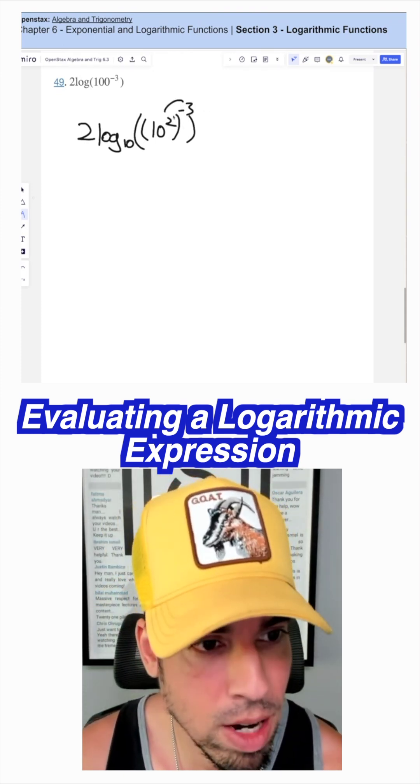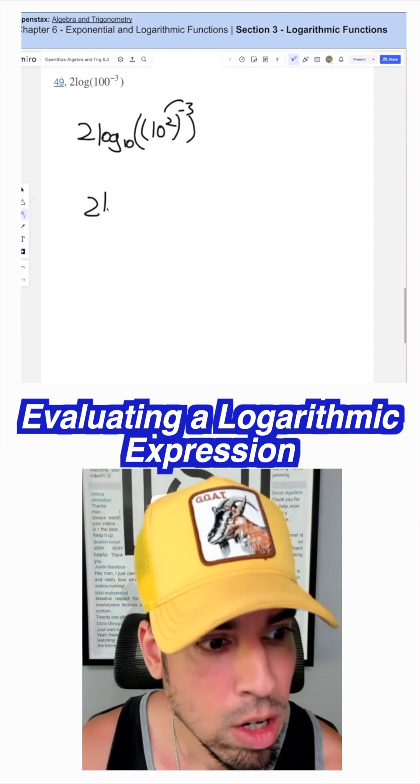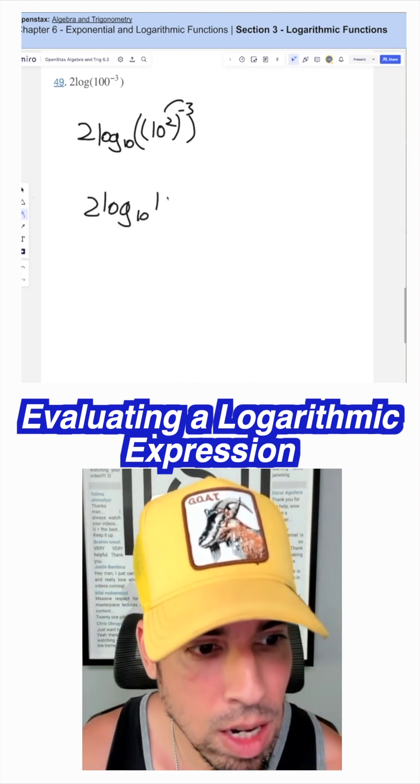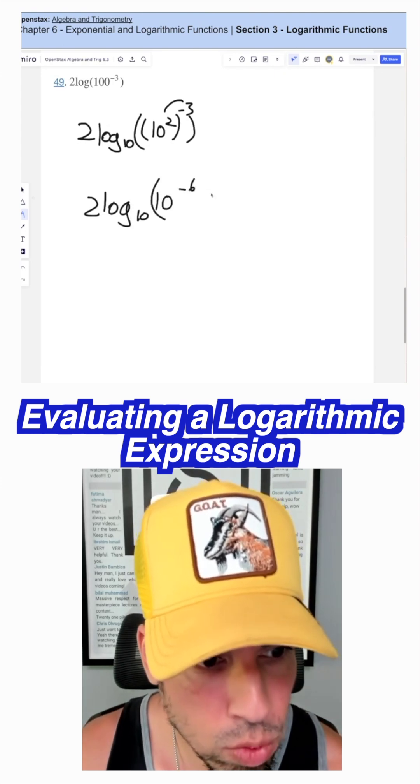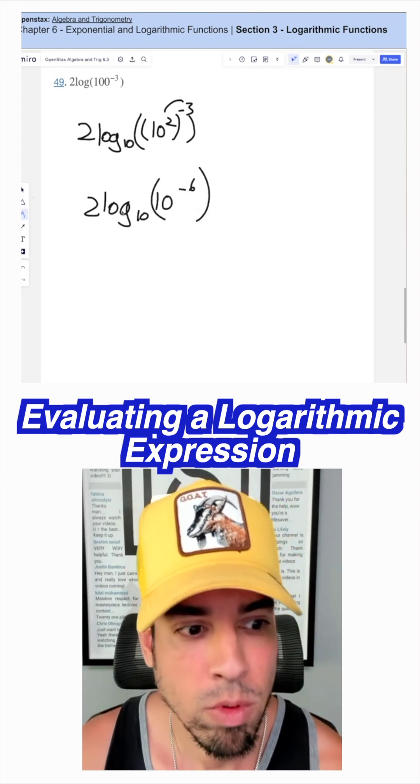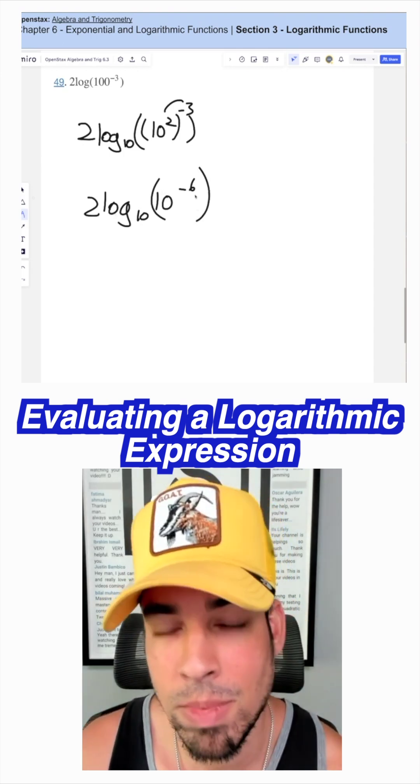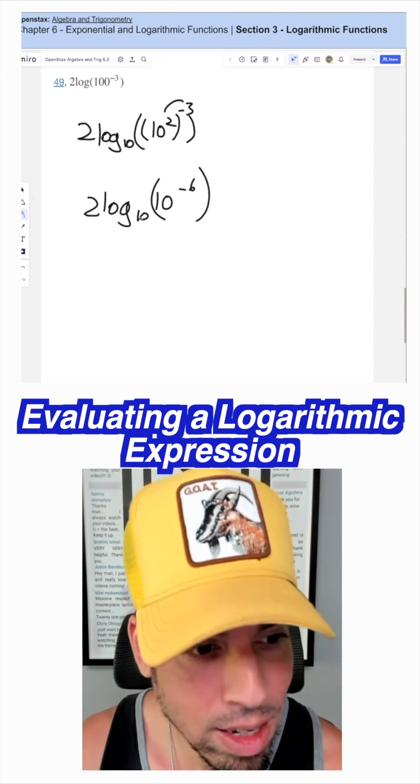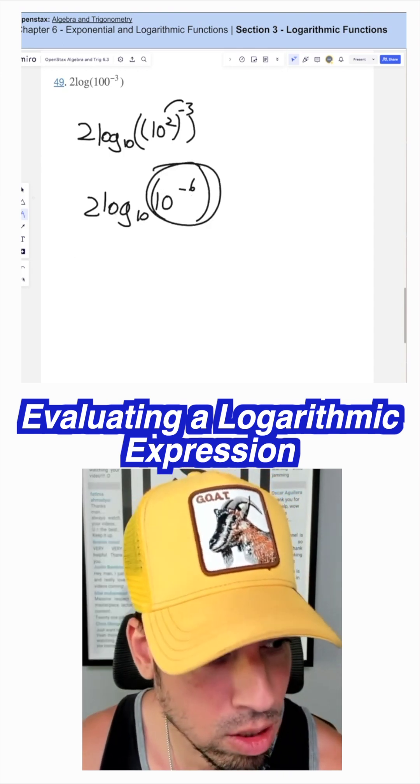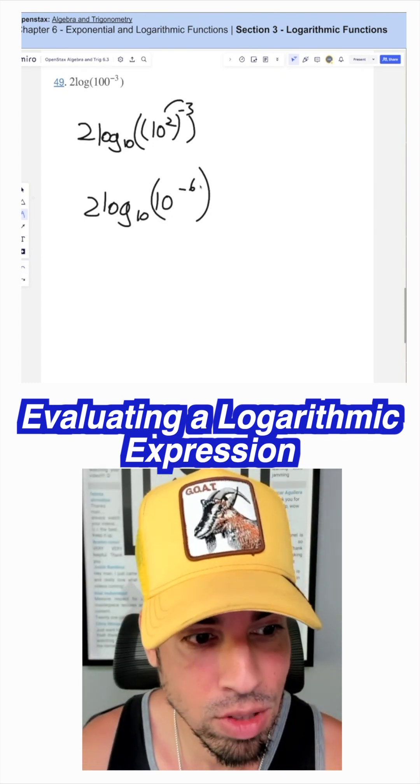So then we can simplify by multiplying those exponents. So we have two log base 10, times 10 to the negative six. So the reason why this is cool is because remember, log base 10 of something is really asking the question, 10 to what power equals this? So it's saying 10 to what power equals 10 to the negative six?